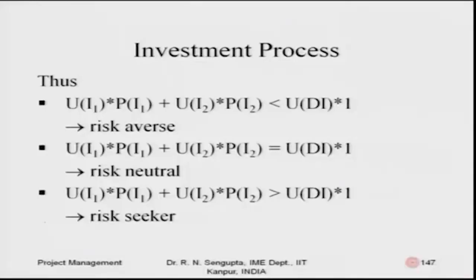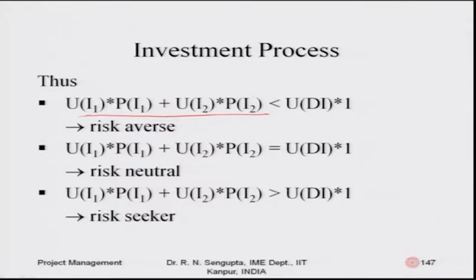This slide is basically trying to balance two sides of the equation. In the first equation, what is the expected value of the gamble — the fair gamble example. The first term is ui1 multiplied by pi1, where i1 is the investment — so the first term is the utility multiplied by its corresponding probability. The second term is the second outcome's utility multiplied by its corresponding probability.